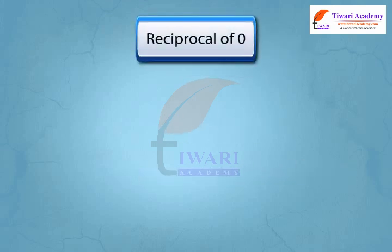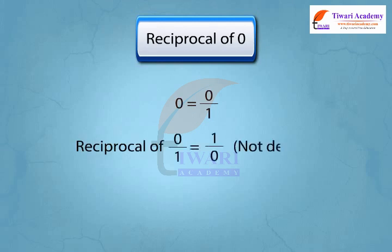Let us see the reciprocal of 0. We can write 0 as a rational number like 0 upon 1. So reciprocal of 0 upon 1 is 1 upon 0, which is not defined. Thus we can say 0 has no reciprocal.